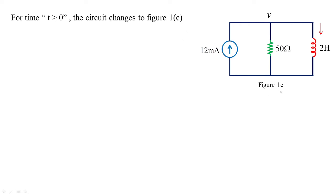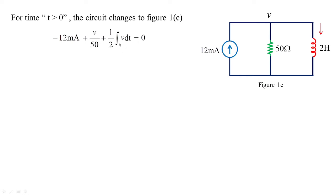Now, from figure 1c we derive the circuit equations using node analysis at node v. Applying KCL: 12 milliamperes is the incoming current, v/50 is an outgoing current, and there is another current flowing in the 2 Henry inductor. The current through the inductor is (1/L)∫v dt = (1/2)∫v dt, since the formula is (1/L)∫v dt. So that is how we get this relation, which we call equation 1.